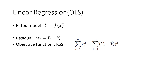Usually the estimated value will not be equal to the true value, and in that case we will have a residual. The residual is equal to yi minus yi hat, that means the difference between the observed value and the predicted value. Our objective function is RSS, which is equal to the residual sum of squares, which is equal to the sum of (yi minus yi hat) squared. Our objective is to minimize this objective function with respect to beta.